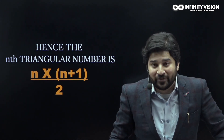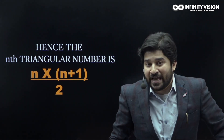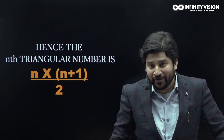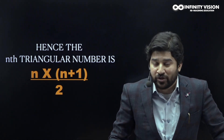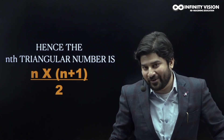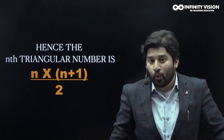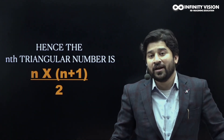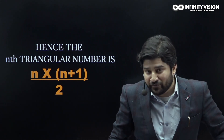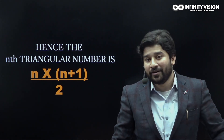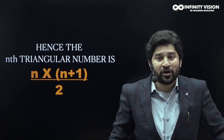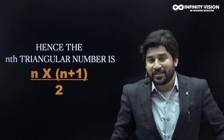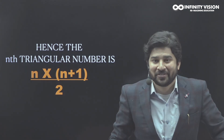Do you remember our video in which we added the natural numbers from 1 to 100? That was our 100th triangular number. So 1 plus 2 plus 3 up to 100, which equals 5050, is basically our 100th triangular number. Now you know how to add consecutive natural numbers and what triangular numbers are.